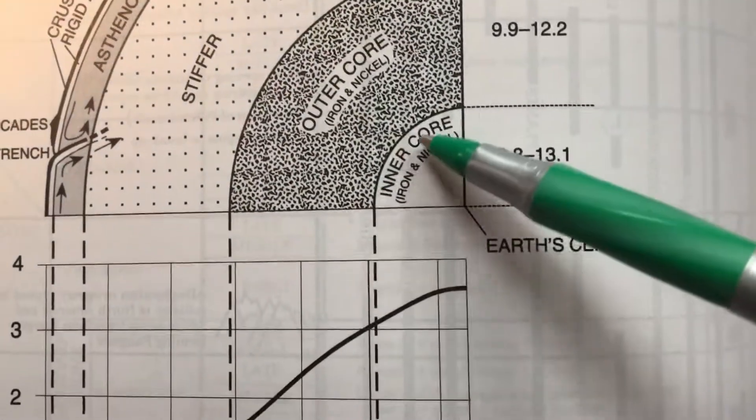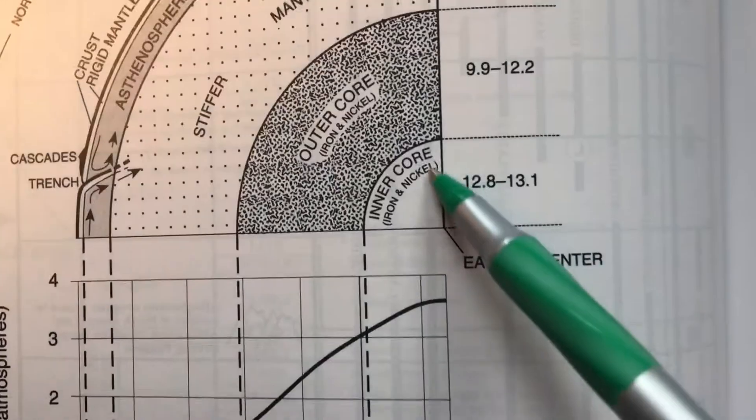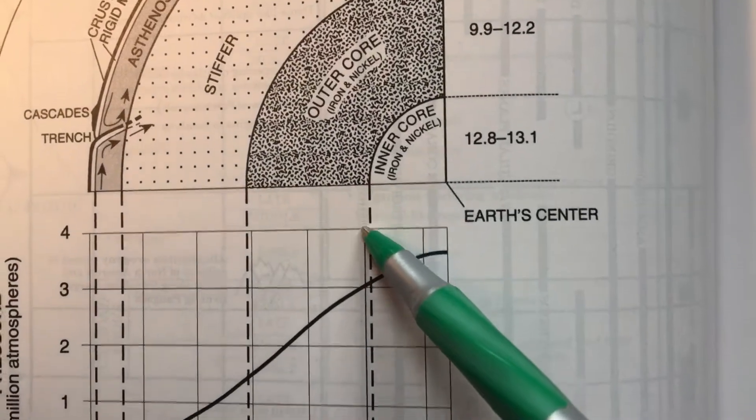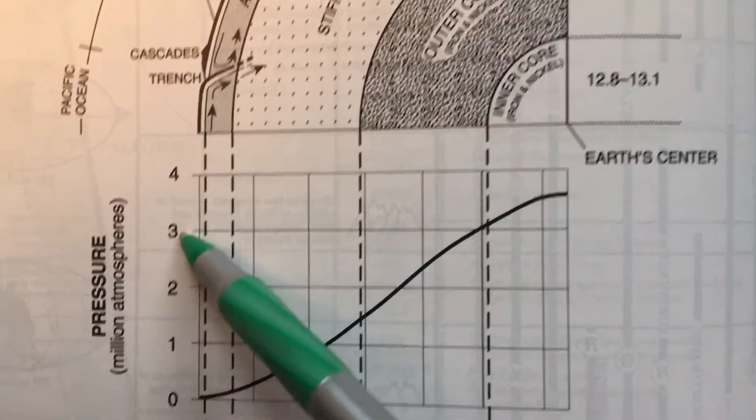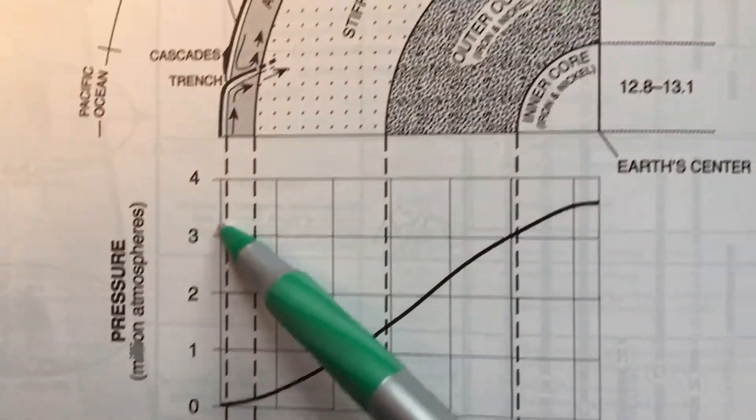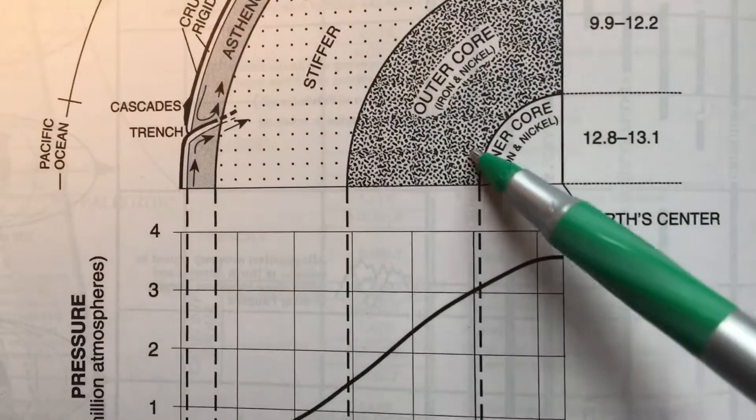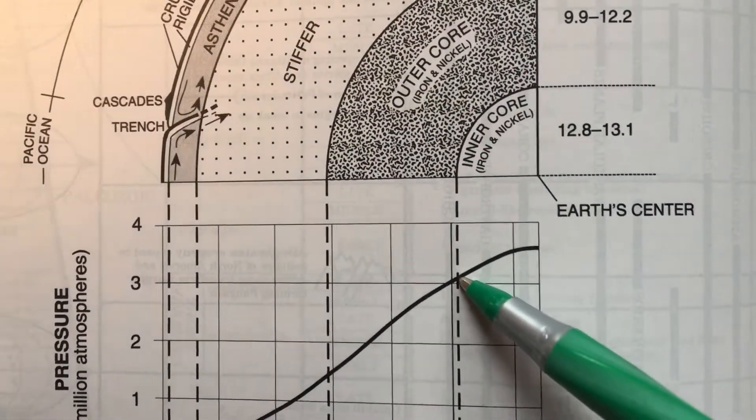What you would do, and normally I have people color all these, but what you would do is follow that line between the inner core and the outer core down into the graph. It's going to hit right there. Then you come over and it tells you that the pressure would be three million atmospheres. Take the pressure of the atmosphere squishing on your head right now, multiply that times three million and that's about what it is there. A tiny touch higher, but that's okay.